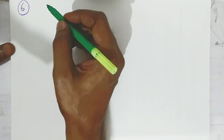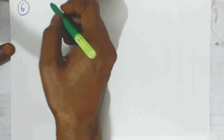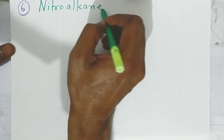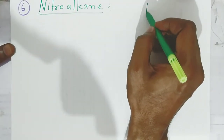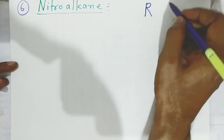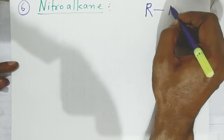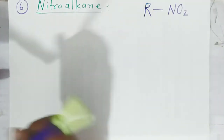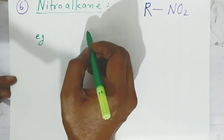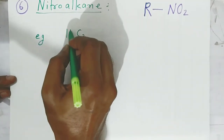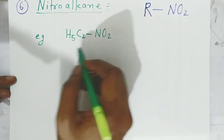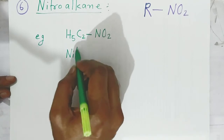The sixth organic functional group is nitroalkanes. In nitroalkanes, the hydrogen of the alkane is replaced by a nitro group (–NO2). This is the general formula of nitroalkanes. For example, C2H5NO2 — this is called nitroethane.